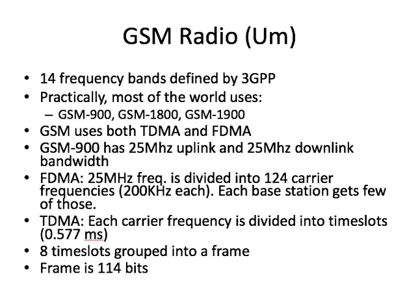GSM-900 has 25 MHz uplink and 25 MHz downlink bandwidth. There are going to be separate radio channels for the uplink traffic versus the downlink traffic. Each of these 25 MHz frequencies is divided, using FDMA, into 124 carrier frequencies. Each of these carrier frequencies is 200 kHz, and each base station gets a few of these. Finally, each of these carrier frequencies is divided using TDMA, or time slotting. Each frame is comprised of eight different time slots, and each frame is 114 bits.